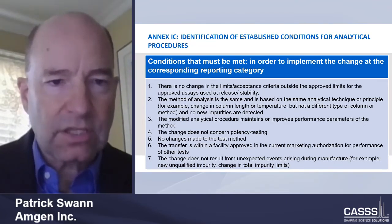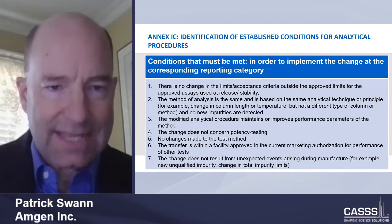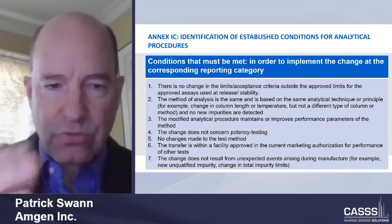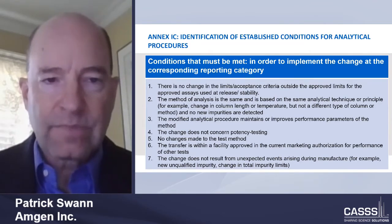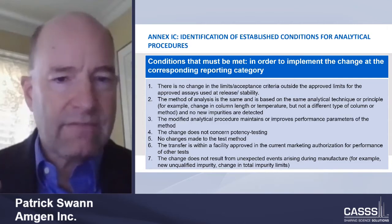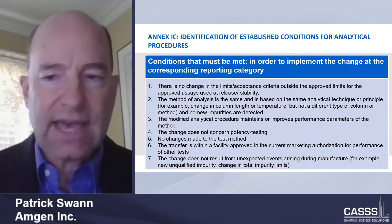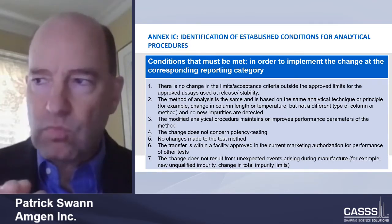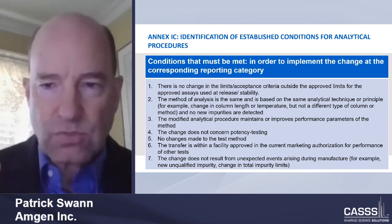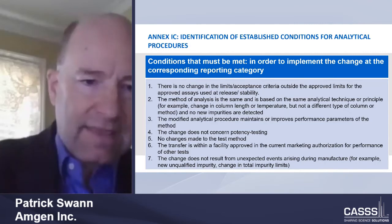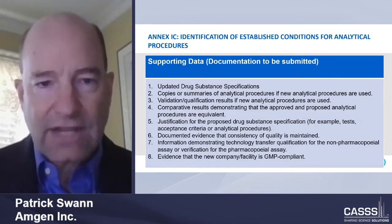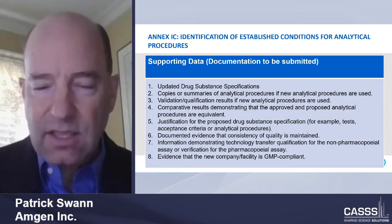A very powerful concept within Q12 is identified in Annex 1C: the identification of established conditions for analytical procedures. What we're looking at is a set of established conditions, what it means to change that established condition with respect to a reporting category, and how that translates to a reporting category. There are two things we have to understand — the conditions that must be met, seven of which are spelled out, as well as the supporting data and documentation that needs to be submitted for that change in the established condition in order to justify that reporting category.